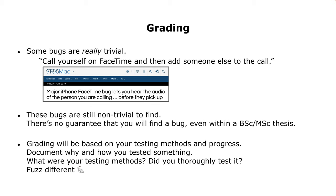When doing this for security research, there is no bug guarantee. Some bugs are really trivial — for example, in FaceTime there was a bug where you could just add yourself to a call and then call someone else, and you could hear their audio before they even picked up. This sounds like a very simple bug but it's very hard to find automated. If you don't know that there is going to be a bug, there is no guarantee you'll find it. Some people look into a program for a whole semester or even longer and still don't find anything.